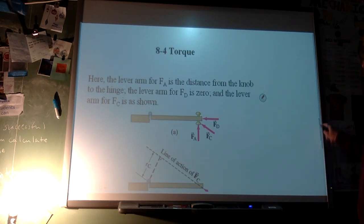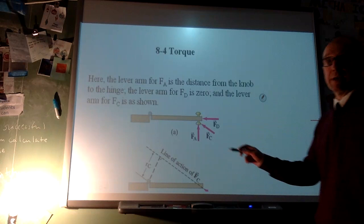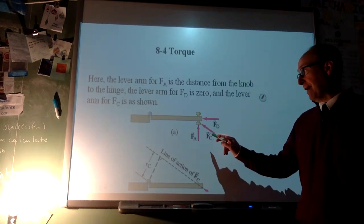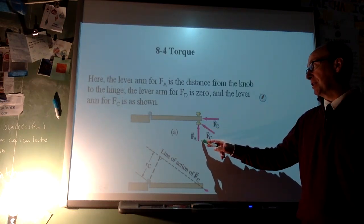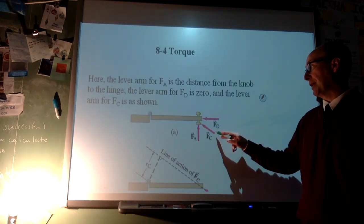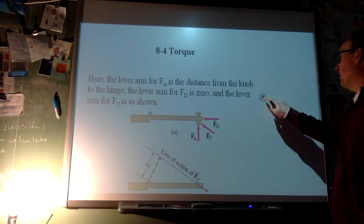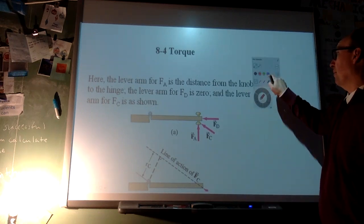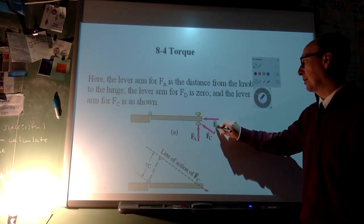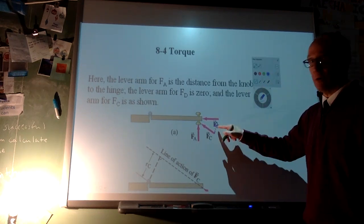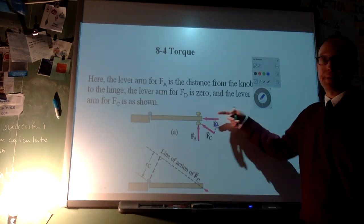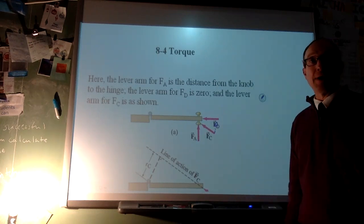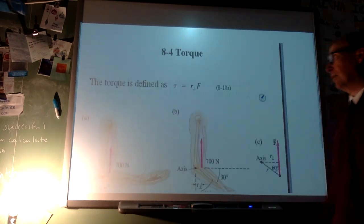We also need to be perpendicular. FA gives the most torque because it's fully perpendicular to the radius. FC has only a component that's perpendicular, so only part of that force contributes. FD is not perpendicular at all and provides no torque.